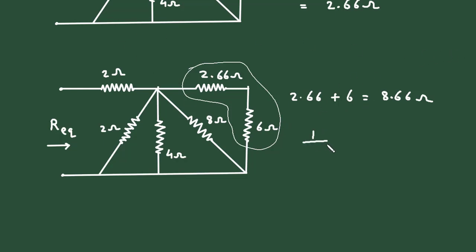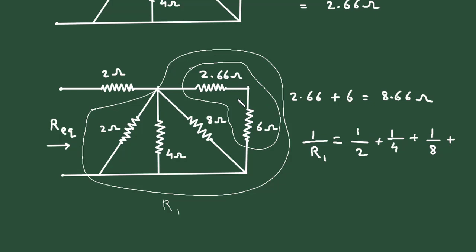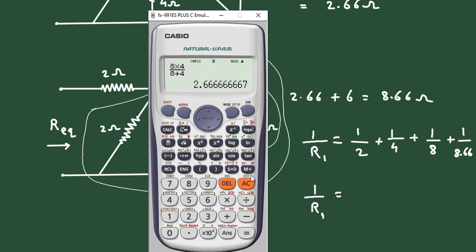So it will be 1 upon R is equal to, let's say this is R1. So 1 upon R1 is equal to 1 by 2 plus 1 by 4 plus 1 by 8 plus 1 upon 8.66.